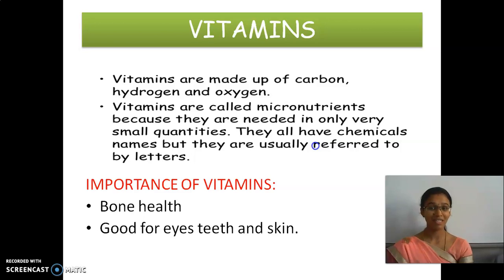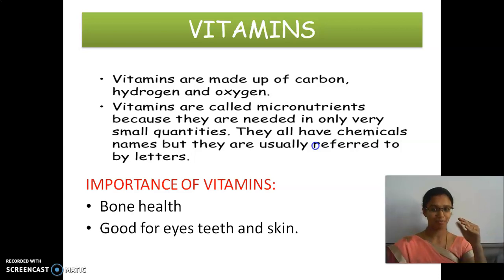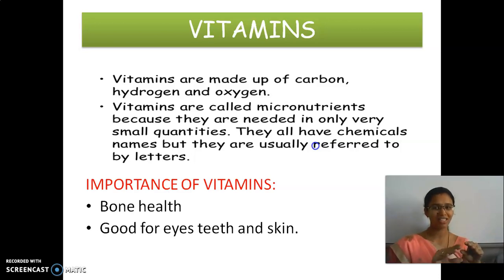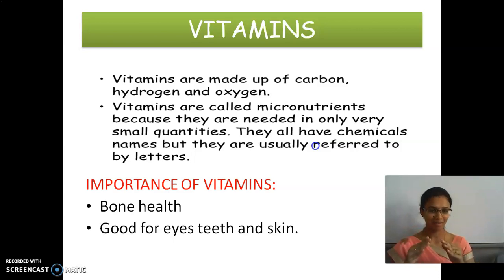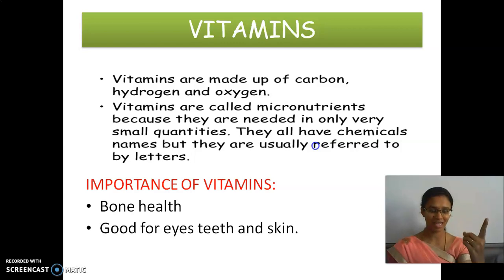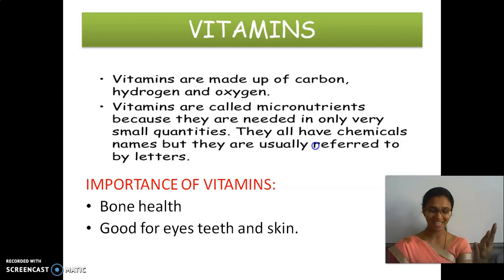And then vitamins. Vitamins are made up of carbon, hydrogen and oxygen. They have two categories: micronutrients which are needed in smaller quantities, and macronutrients. These vitamins are named by letters. For example, vitamin A, vitamin B, vitamin C.